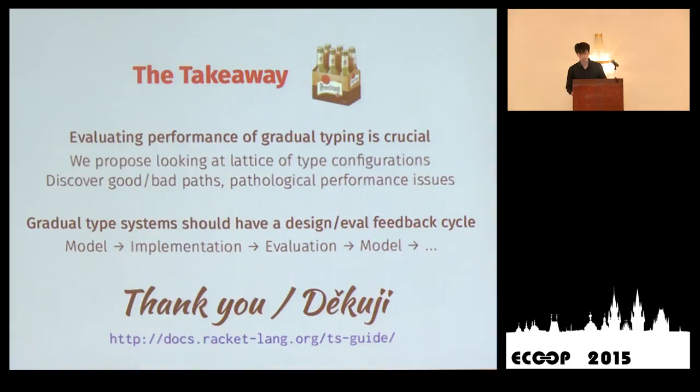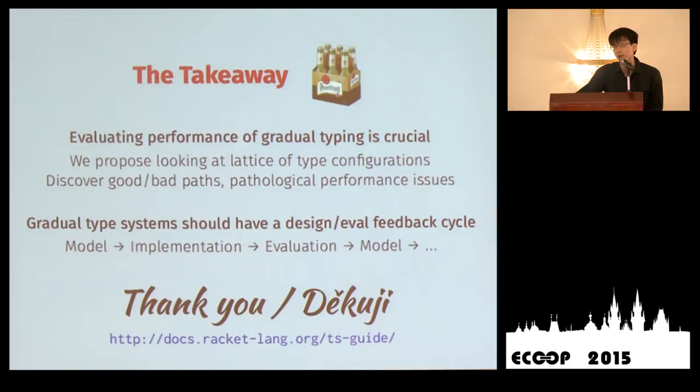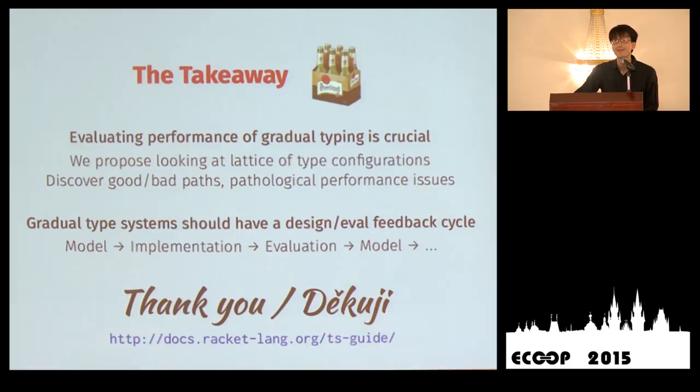Question: about the acquire benchmark — you said it was a distributed game involving a network. How did you eliminate network timing? Answer: we disabled the networking portion; it has two modes of operation, so we used the non-networked mode. Follow-up question: were the lattice points generated by hand or automatically? Answer: we have two versions of each module — one with type annotations, one the original — and a script combines all modules in all combinations, then we benchmark them.